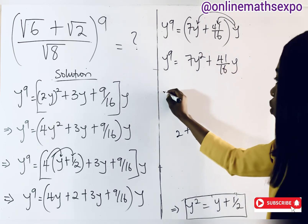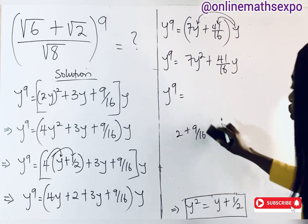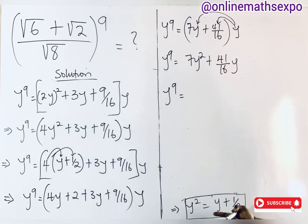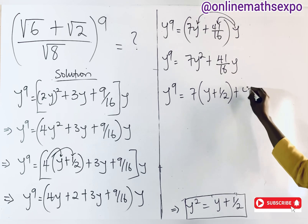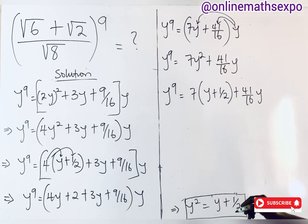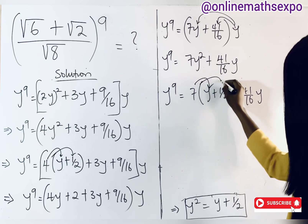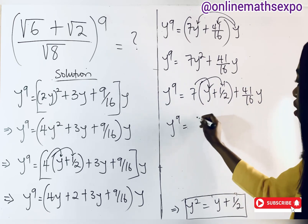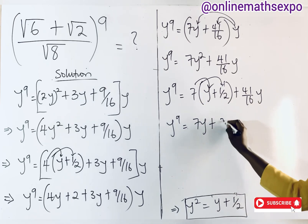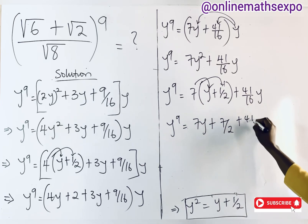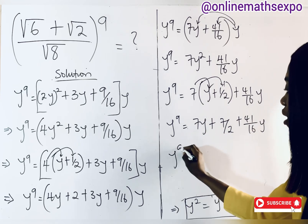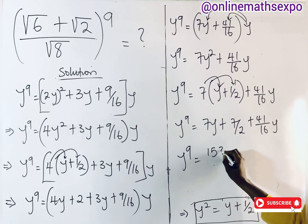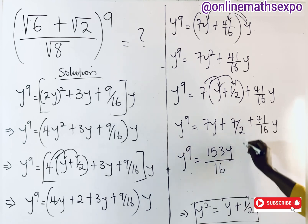We still have y² to remove. Substituting y² = y + 1/2 again: 7y² becomes 7(y + 1/2) = 7y + 7/2. So y⁹ = 7y + 7/2 + (41/16)y. Adding 7y and (41/16)y: converting 7y to 112/16 y gives (112/16 + 41/16)y = 153y/16. Therefore y⁹ = 153y/16 + 7/2.